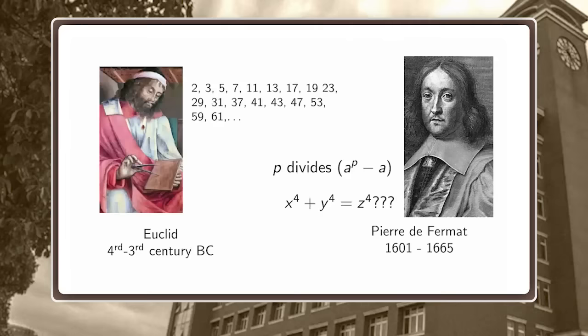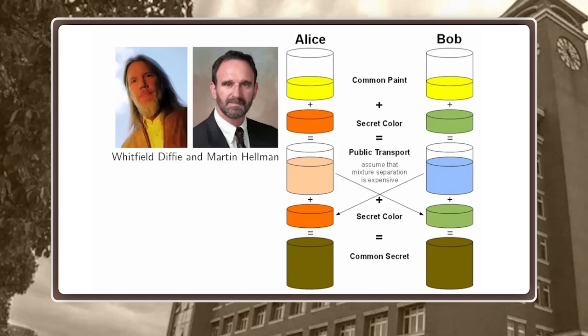Number theory is a little different — one of the oldest parts of math. For 2,000 years it was basically just a beautiful game without any application. Until in the 70s, two mathematicians, Diffie and Hellman, used number-theoretic concepts to start something called public key cryptography. It allows two partners, Alice and Bob, to agree upon a shared secret key without ever meeting in private. Since then, number theory has found many applications, mostly in cryptography.